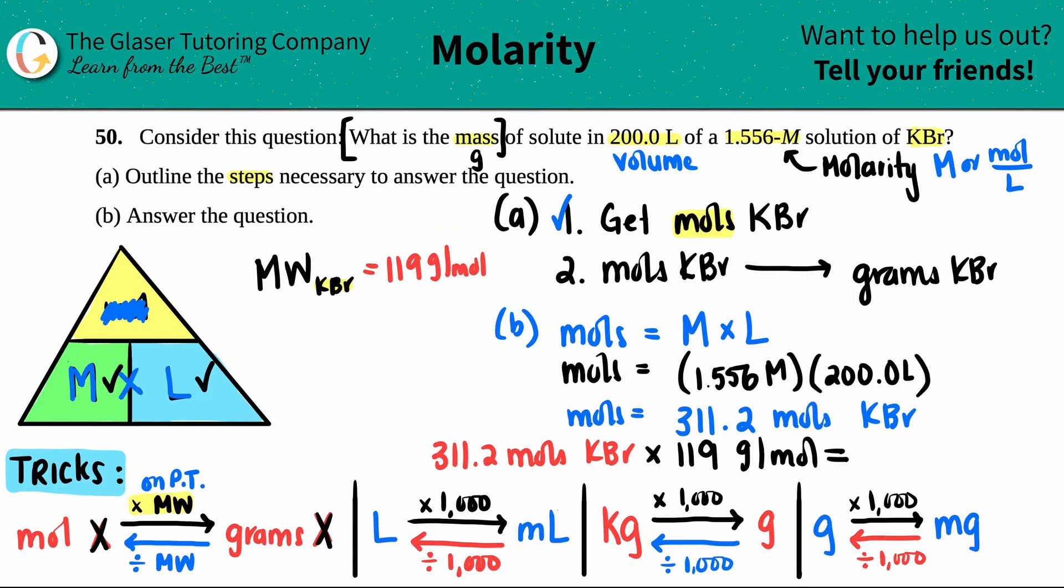And I'm going to put this into scientific notation. So 3.703 times 10 to the 1, 2, 3, 4. And that's how many grams of KBr. And that's your mass.